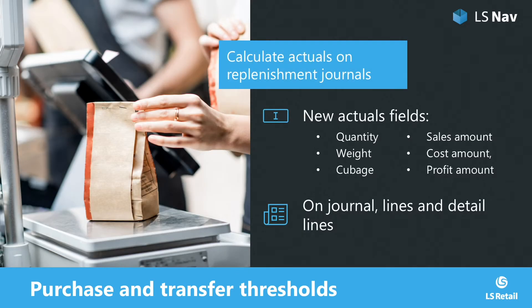The threshold management functionality introduces new actual fields to the replenishment purchase and transfer journals. You can now easily see beside the quantity the weight, cubage, sales amount, cost amount, and expected profit amount for a complete replenishment journal, the replenishment lines, and the detail lines.